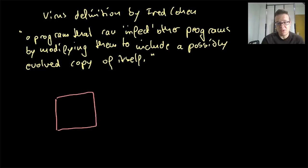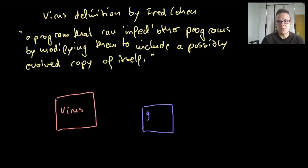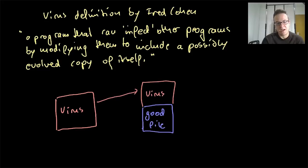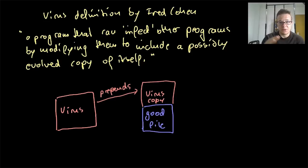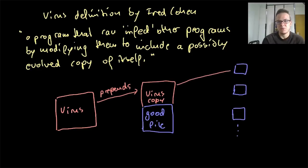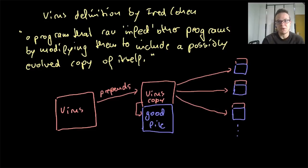Maybe you remember, maybe you've seen my last video on virus infection strategies. The example Cohen provides is a prepending virus. He says this virus will prepend to the host file, and then it will be executed because it's first, and upon execution it infects other files, and then it may run the code of the host file. That's a very typical prepending virus, just one example of one version of it.